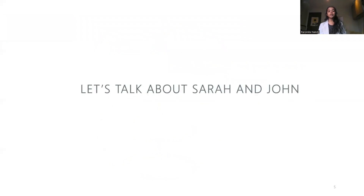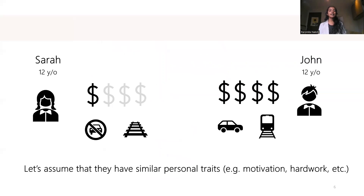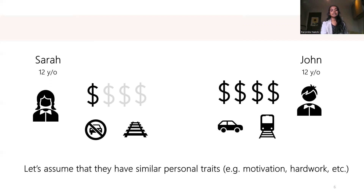Now let's illustrate this with a hypothetical example and talk about Sarah and John. Sarah and John are both 12-year-old individuals. Sarah's household has low income; they don't own a personal vehicle and live in an area with poor public transit. John's household, on the other hand, has high income and a personal vehicle, and they live in an area with good public transit.